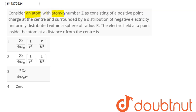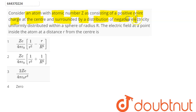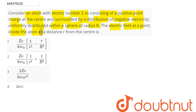Consider an atom with atomic number Z consisting of a positive point charge at the center, surrounded by a distribution of negative electricity uniformly distributed within a sphere of radius R. The electric field at a point inside the atom at a distance small r from the center is to be found.